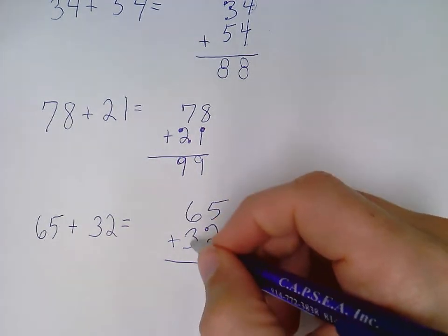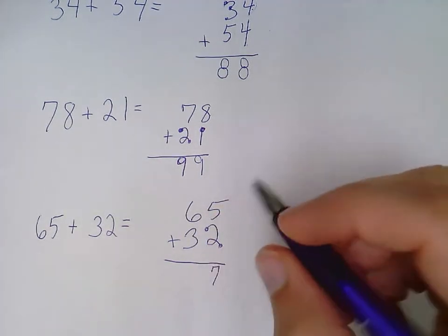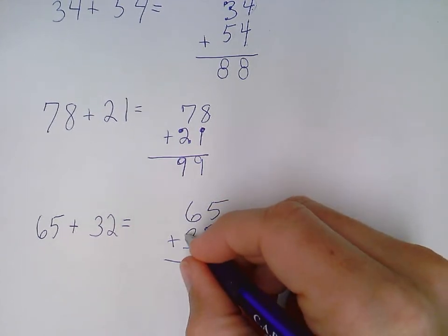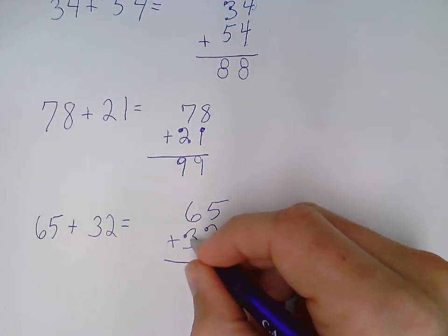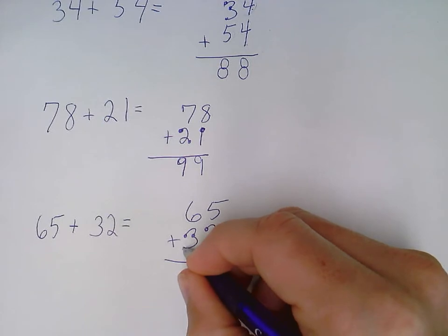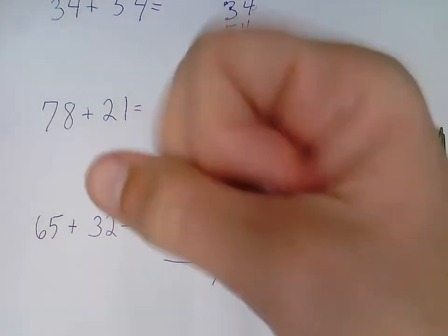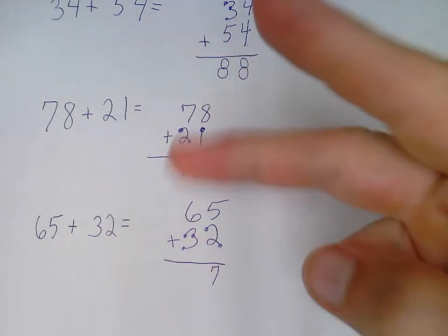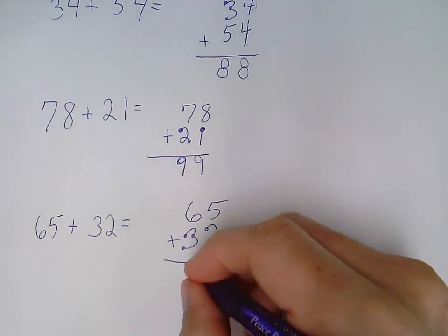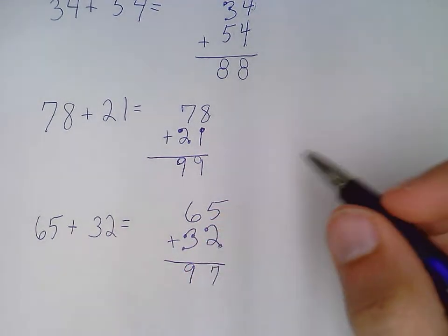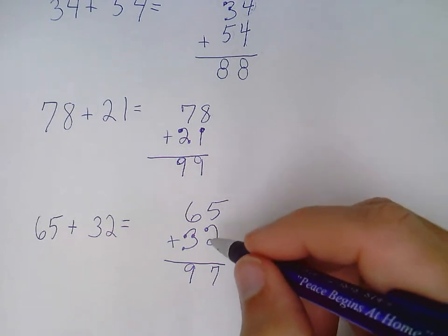On to the next, on to the tens column. 6 plus 3: 6, use my touch dots: 7, 8, 9, or grab the 6: 7, 8, 9. 97 is my answer for 65 plus 32.